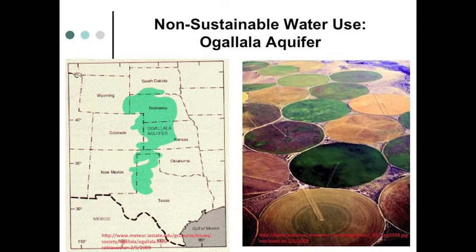This slide shows an example of non-sustainable use of a resource — in this case, water. On the left we're looking at the Ogallala Reservoir, which runs from North Texas up through South Dakota. On the right we see the use of that water for irrigation. The problem is that water is being extracted from the reservoir at a rate greater than it is being replenished, so eventually this water will be depleted.